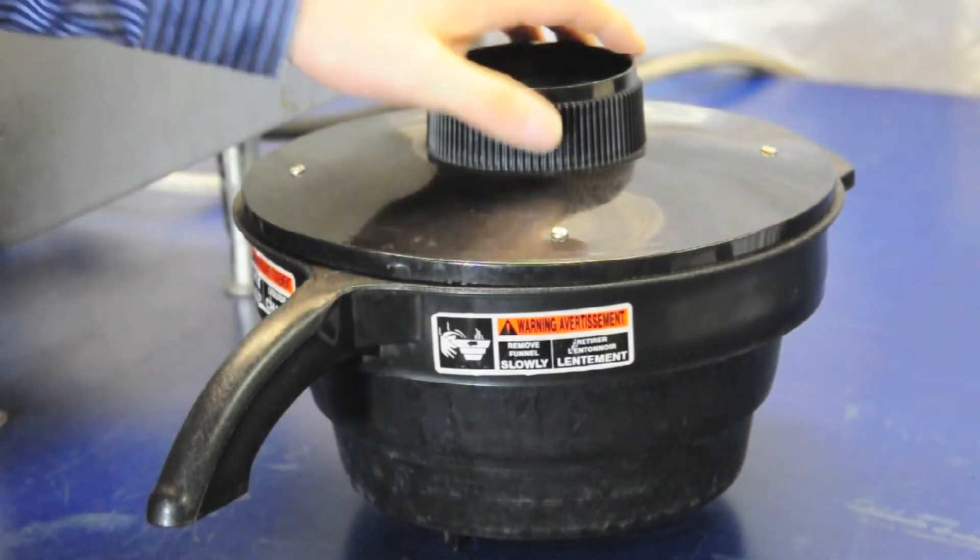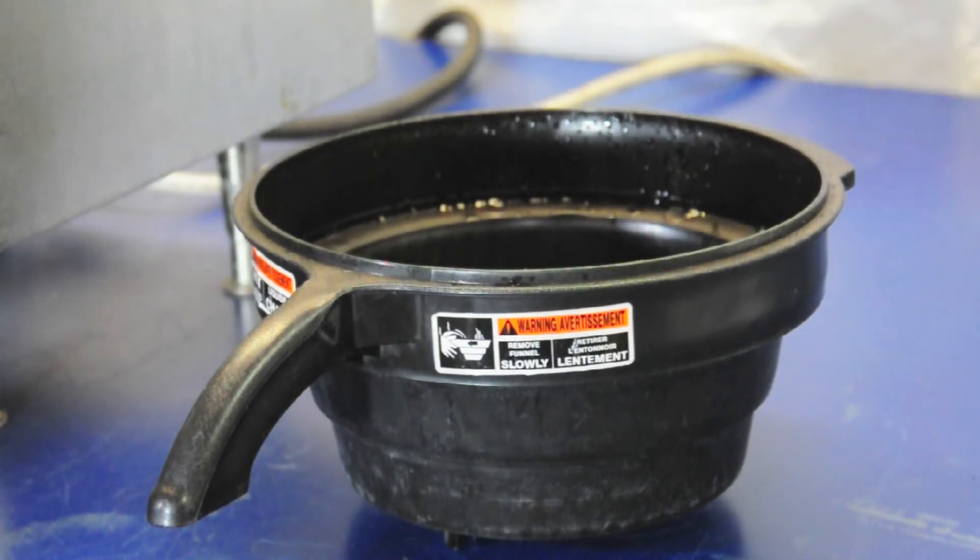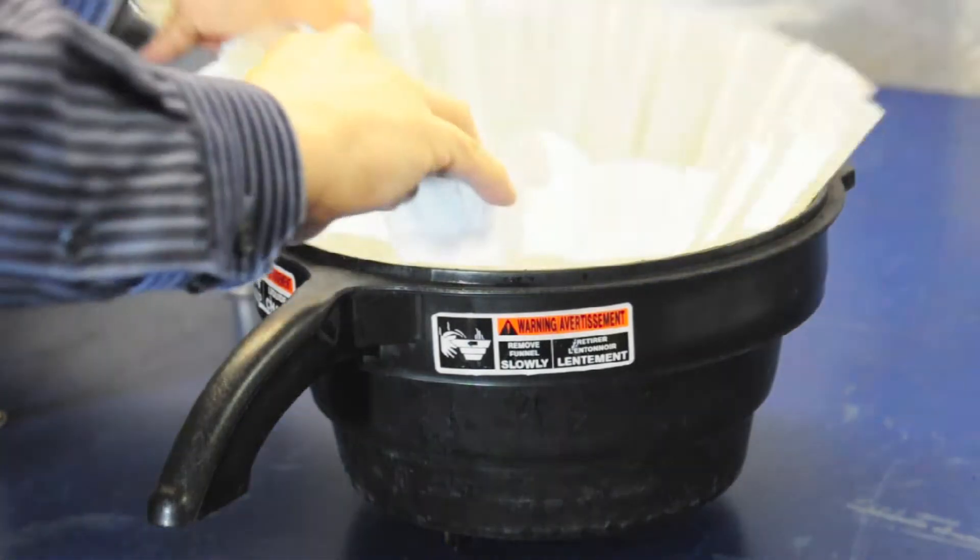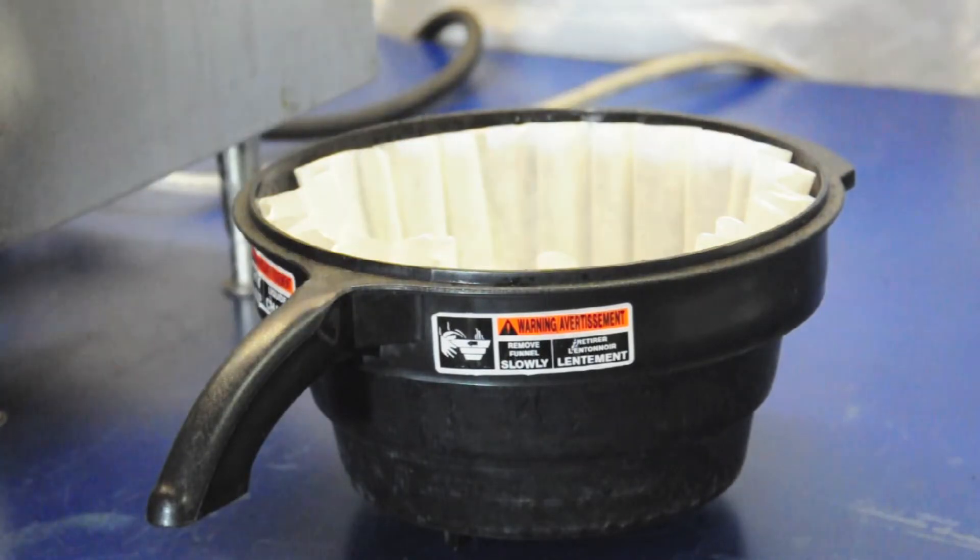Remove the brew funnel from the funnel support, take the lid off, insert one Bunn 18 by 7 inch paper filter into the brew funnel.